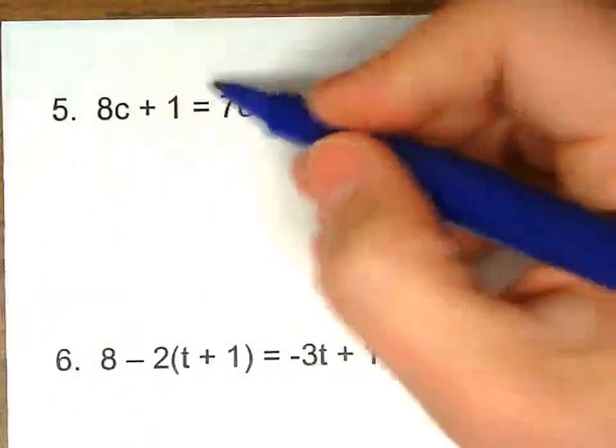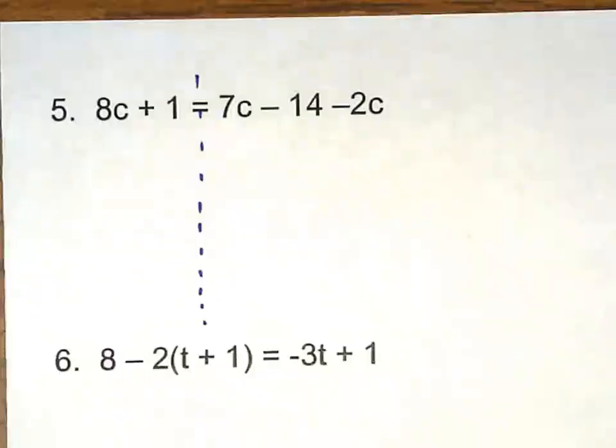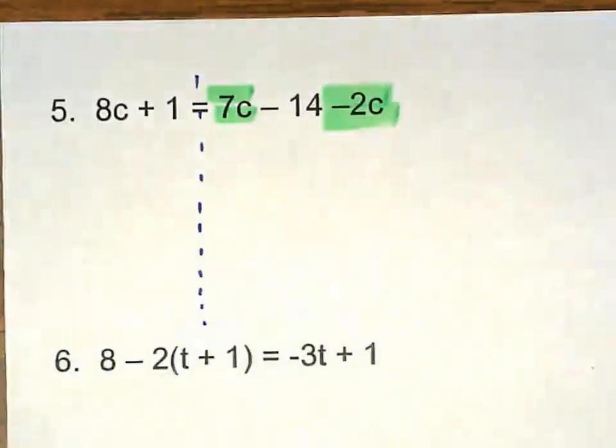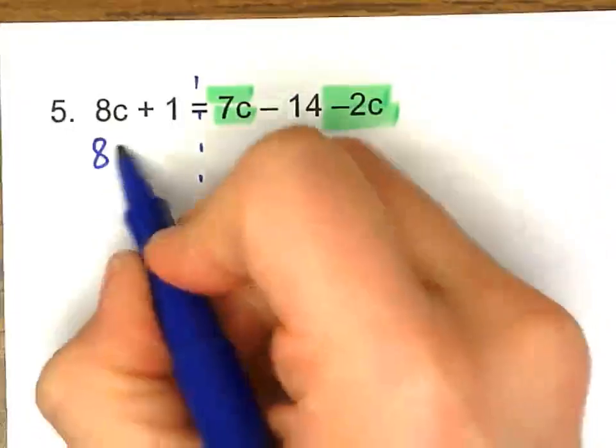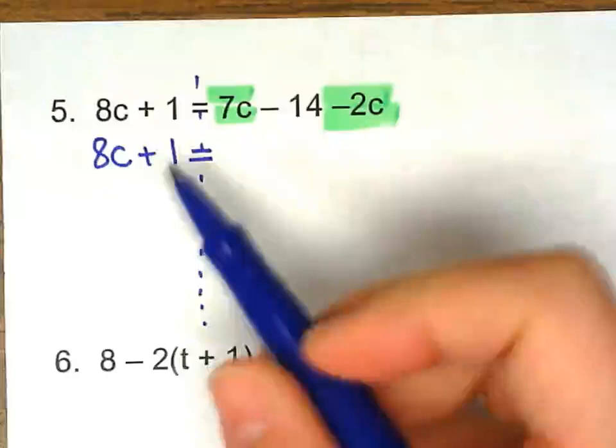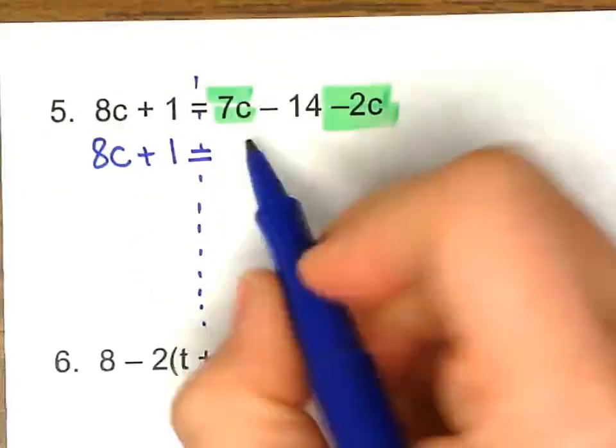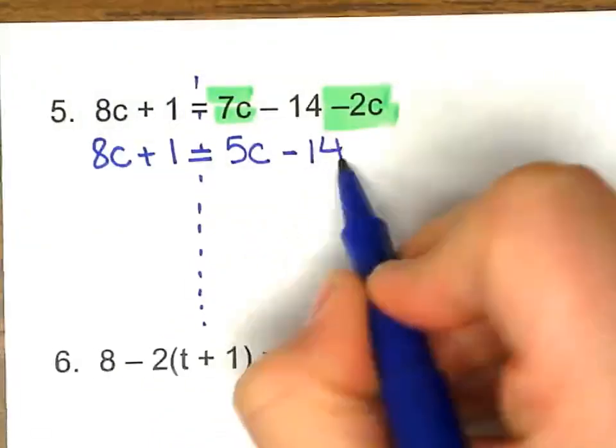3 more. Separate both sides. Now before I start moving things around, I want to combine what I can on the same side. So I'm going to combine 7c and negative 2c. 8c plus 1. I'm not going to deal with them. So I just bring them down. 7 minus 2 is 5. Bring negative 14 down.